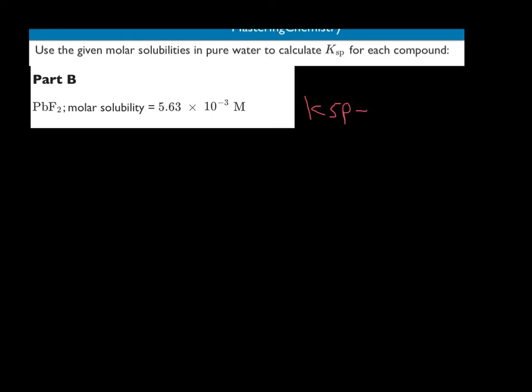KSP is going to equal Pb multiplied by F squared, right? Alright, and we're just to make it easier, we're trying to solve for this value.